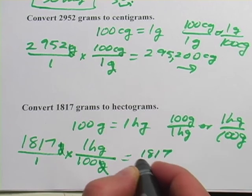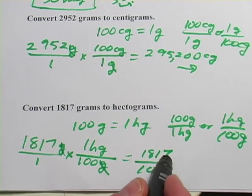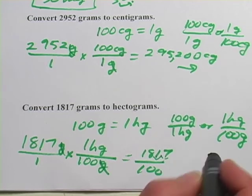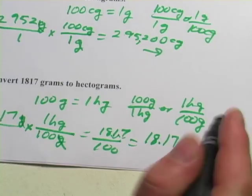So 1,817 on the top, 100 on the bottom. We'll do our division there. And you're really moving the decimal place by two points again. So this is going to be 18.17 hectograms.